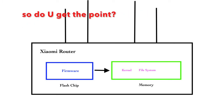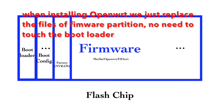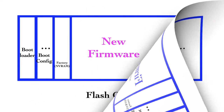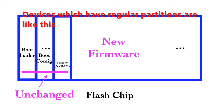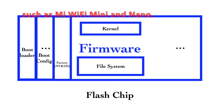When installing OpenWRT, we just replace the files of the firmware partition — no need to touch the bootloader. That is the common situation. Devices which have regular partitions are just like this, such as MiWiFi Mini and MiWiFi Nano.